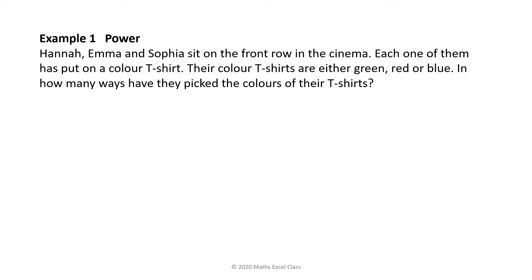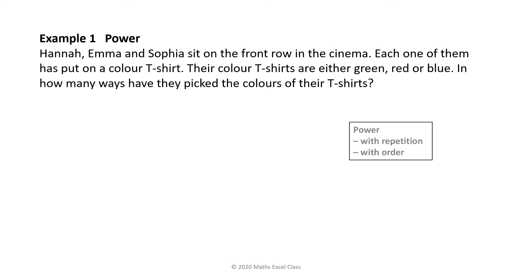Example 1. Hannah, Emma and Sophia sit on the front row in the cinema. Each one of them has put on a colored t-shirt. Their t-shirts are either green, red or blue. In how many ways have they picked the colors of their t-shirts? Each girl can choose any color, so we can have repetition. They are sitting in a row, so order matters.